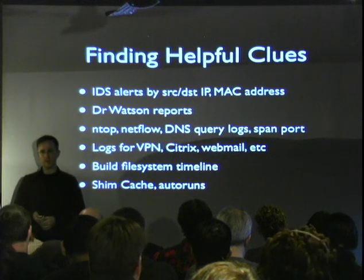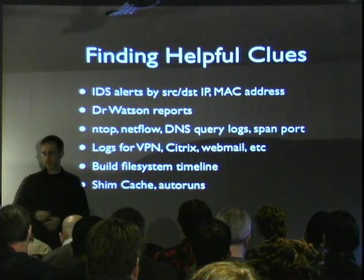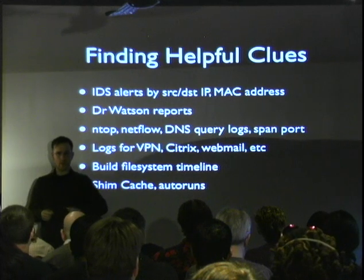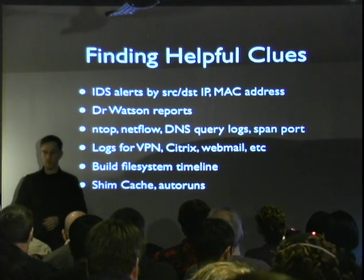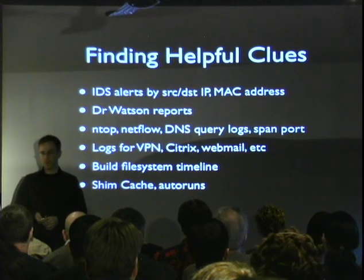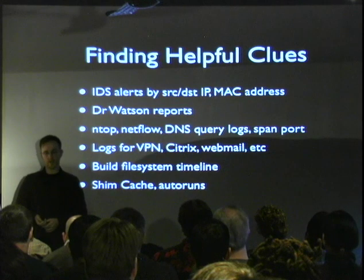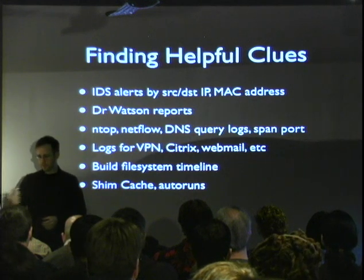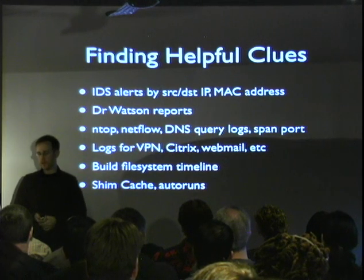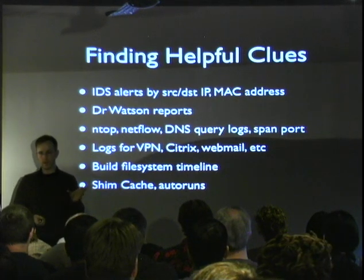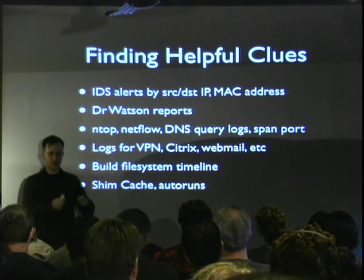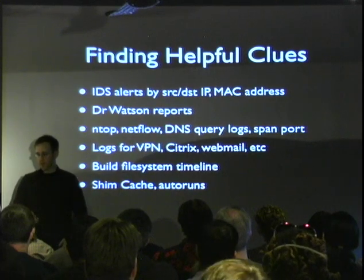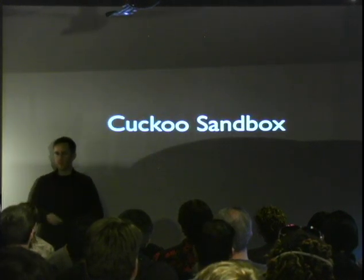Some helpful places to look for clues during an incident: IDS alerts — take one alert, use that IP address as a source-destination search, and correlate with other events. Dr. Watson reports, if you have these turned on — our IDS actually picks up Dr. Watson reports so you can see when a process crashed, like Internet Explorer crashing right after visiting a blackhole website. Network data: NTOP, NetFlow, DNS query logs. Have a span port already configured so when you're having a weird incident you can just plug in or turn on your TCP dump. Remote access logs are pretty valuable too.